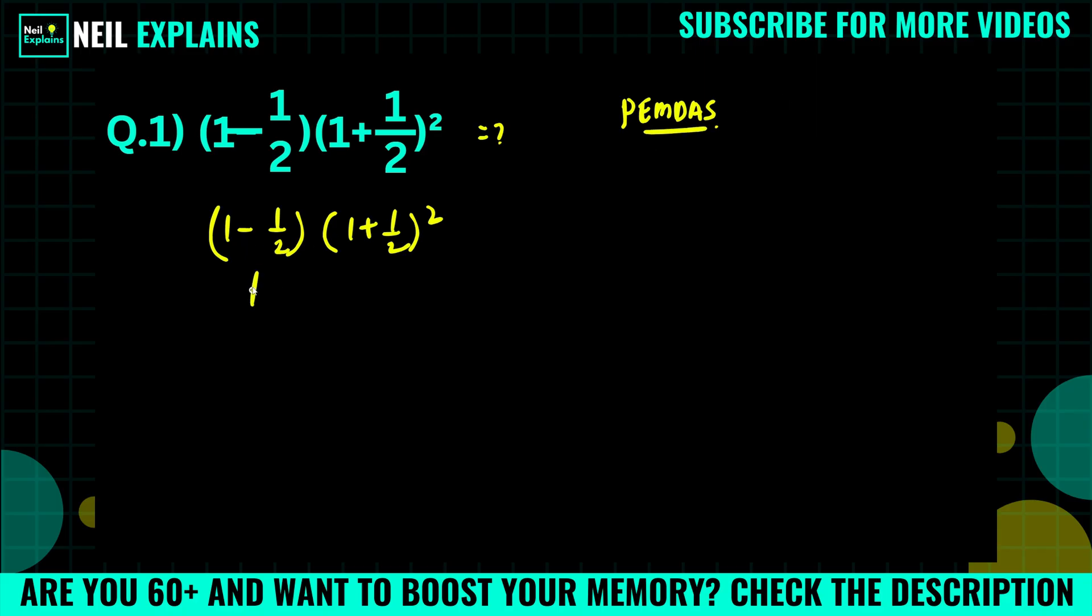First we will solve for this one and next this one. 1 minus 1/2, like 1 minus 1/2, which can be, the LCM is 2, 2 minus 1, that is 1/2. Simply you can understand 1/2 is nothing but 0.5, and this is 0.5 for 1/2.